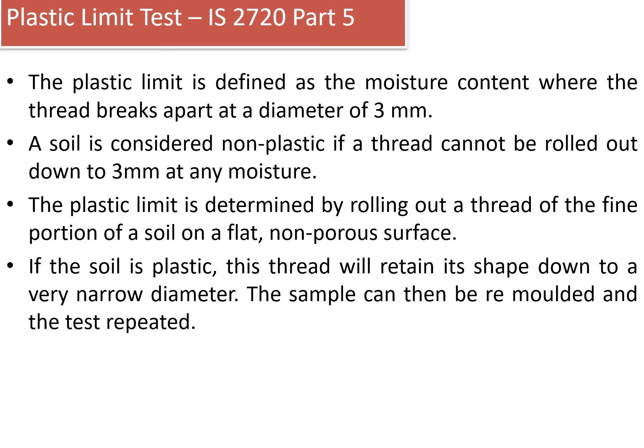Similarly, plastic limit is tested as per IS 2720 Part 5. The plastic limit is defined as the moisture content where the thread breaks apart at a diameter of 3 millimeters. A soil is considered non-plastic if a thread cannot be rolled out down to 3 millimeters at any moisture content. Generally, sandy soils are considered non-plastic, as when sand content is higher, rolling of that particular soil is difficult.